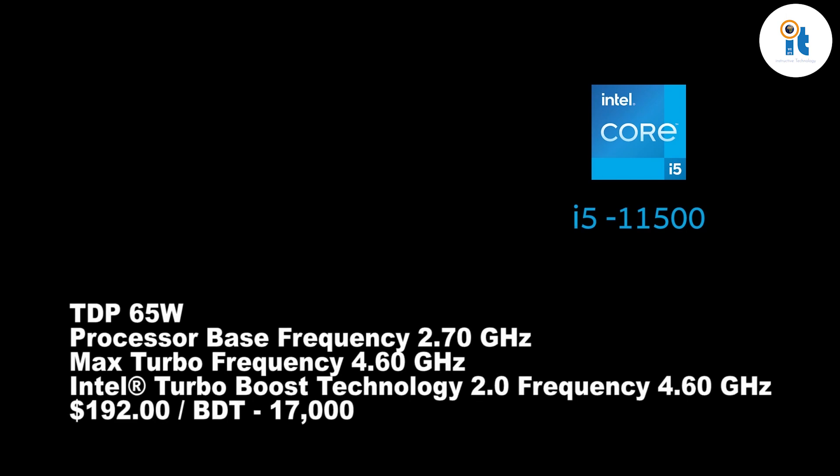Intel Core i5-11500 processor: TDP 65 watt, processor base frequency 2.70 GHz, max turbo frequency 4.60 GHz, Intel Turbo Boost Technology 2.0 frequency 4.60 GHz. Price: approximately $192. Note: prices are not the same all over the world.